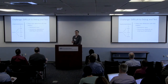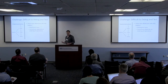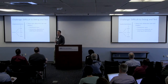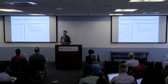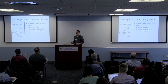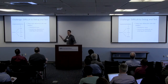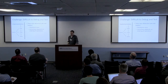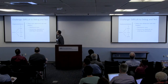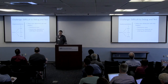Data race detectors are typically not helpful for these types of data structures, because these data structures make use of what are effectively intentional races using atomic operations instead of normal memory accesses. Thus, their correctness often depends on the exact ordering of operations.